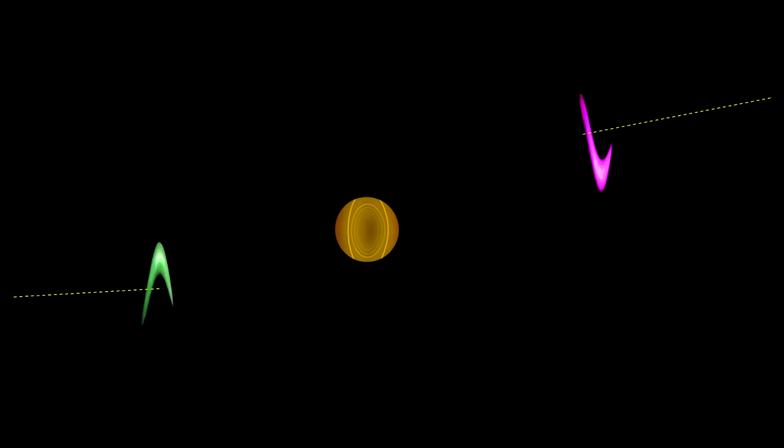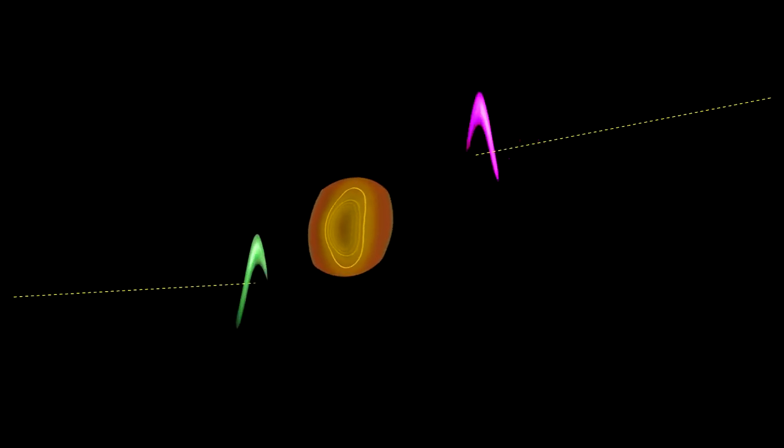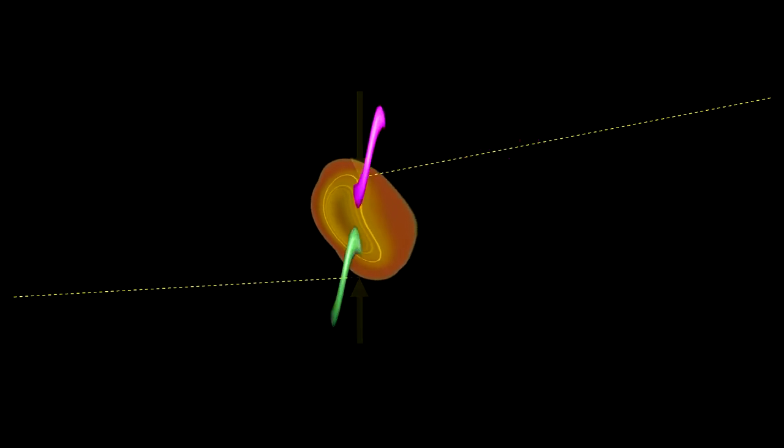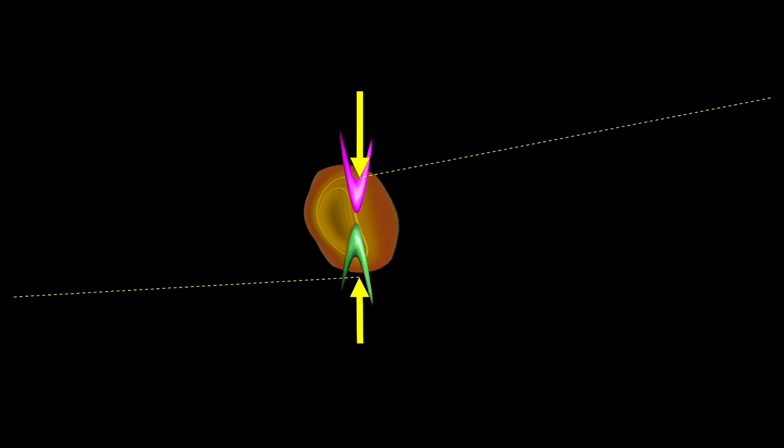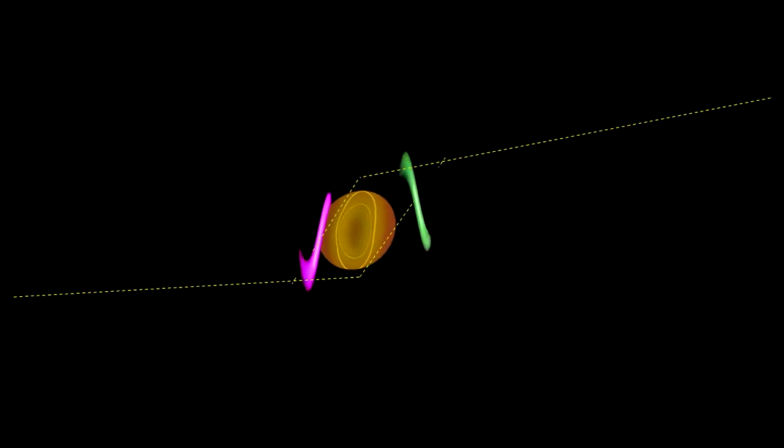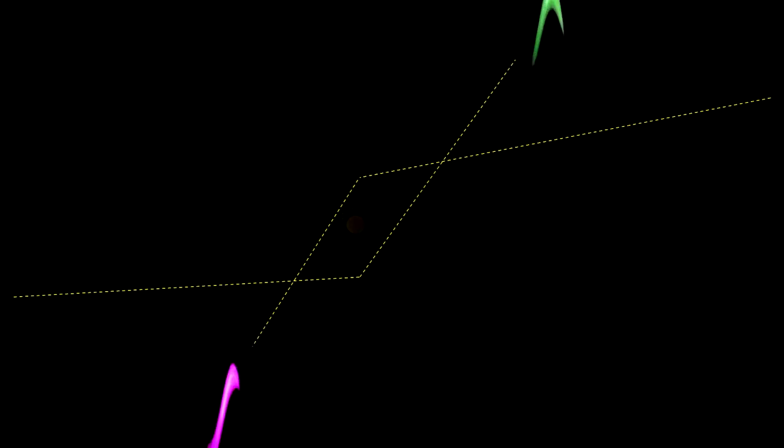The same is true if an electron and a positron pass near each other. The disturbance in this case is similar in type but different in its details, with the result that the oppositely charged electron and positron are attracted to each other. Their paths are bent inward.